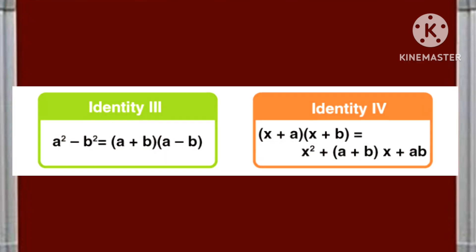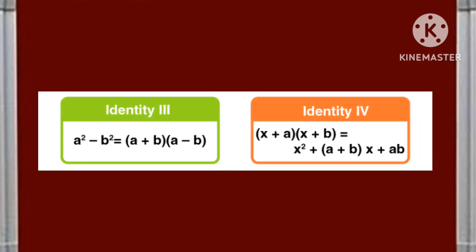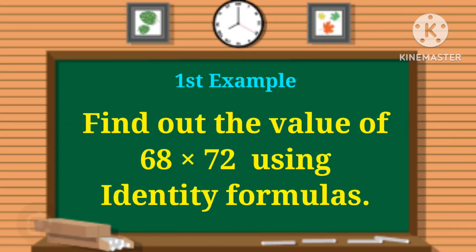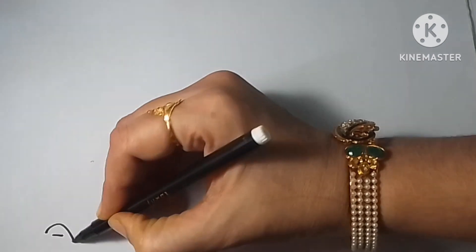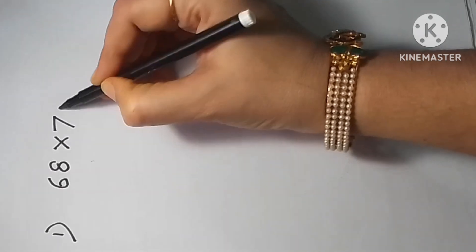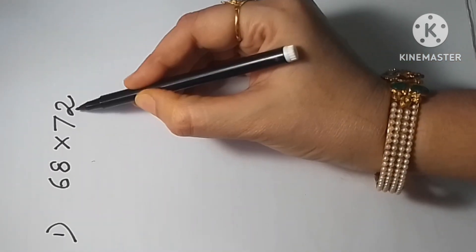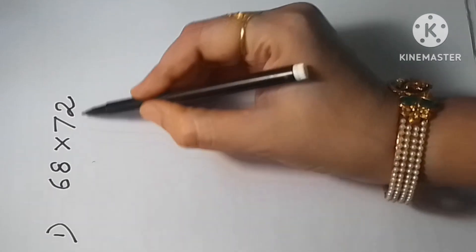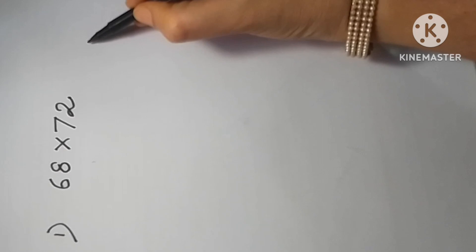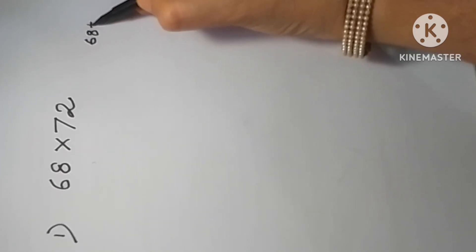Today I am going to explain the example sums based on the third and fourth identity formulas. To solve this problem, we have to find out the middle term of 68 and 72. To do that, we add both terms and divide by 2. We get the middle term of 68 and 72, which is 70.